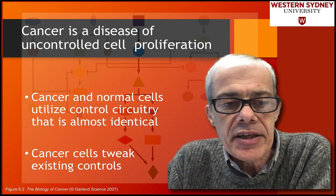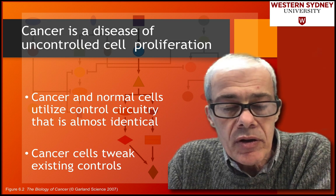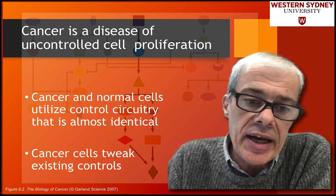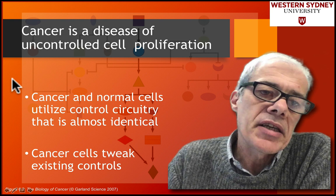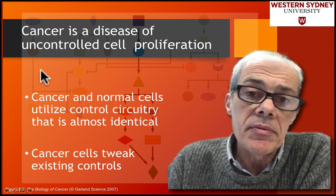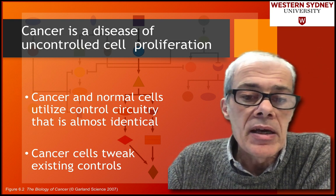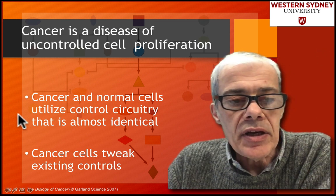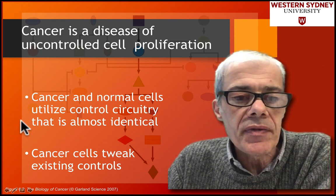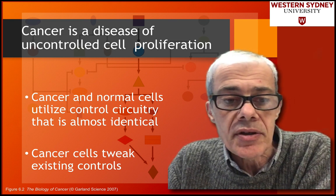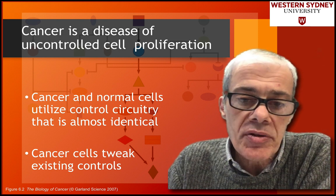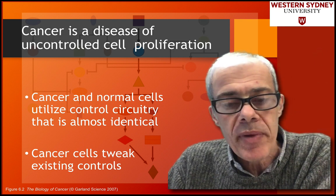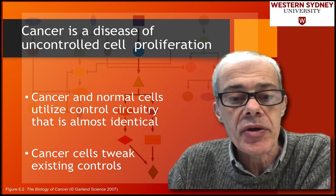We've also discussed oncogenes and tumor suppressor genes, which are the proteins often mutated in cancer cells. These oncogenes and tumor suppressor genes play a role in pathways that regulate cell growth. The machinery that controls growth in normal cells is perturbed in cancers — it's almost the same, but tweaked — and these tweaks to normal growth pathways are what give cells a growth advantage.